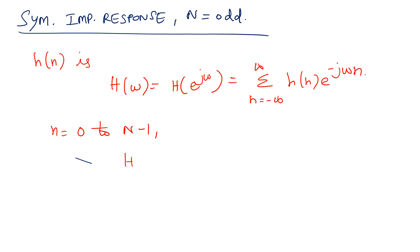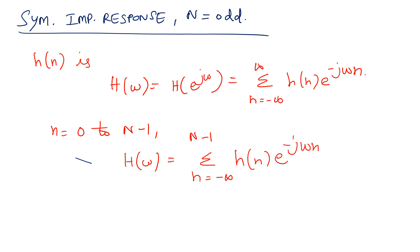Therefore I can rewrite the above equation as summation n equal to 0 to N minus 1 of h(n) e^(-jωn). Here the impulse response h(n) is set to be symmetric, and it has an odd number of samples.